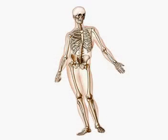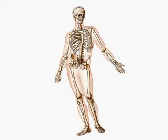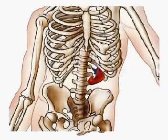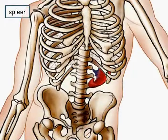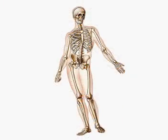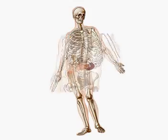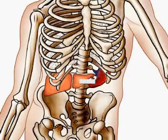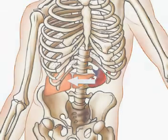Erythrocytes form in the red bone marrow, live for about 120 days, and are finally broken down by the spleen. The hemoglobin that is released is transported to the liver where it is broken down.